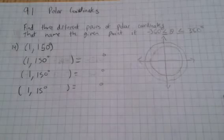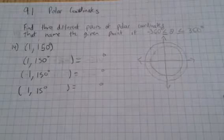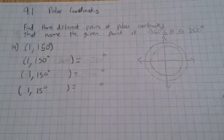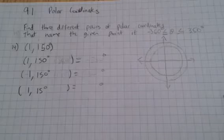In this video, I'll show you how to solve number 14 from section 9.1, and it asks us to find three different pairs of polar coordinates that name the given point if the angle is between negative 360 degrees and 360 degrees.